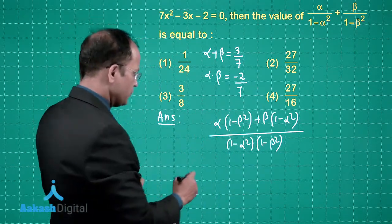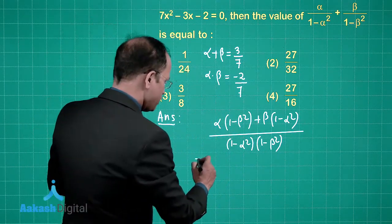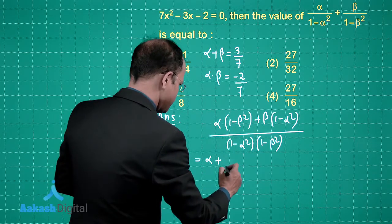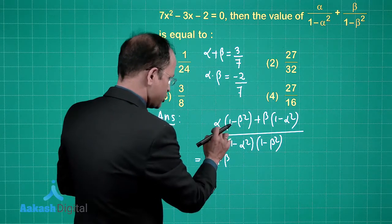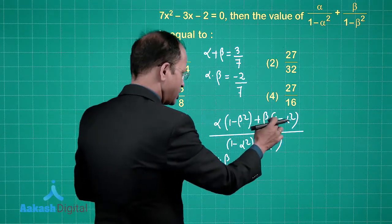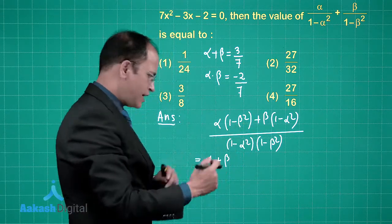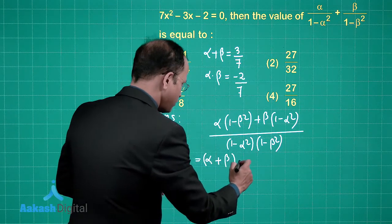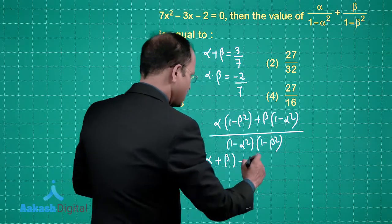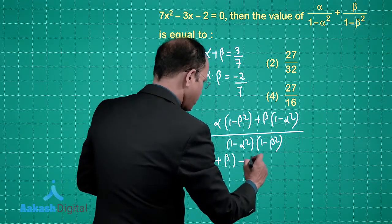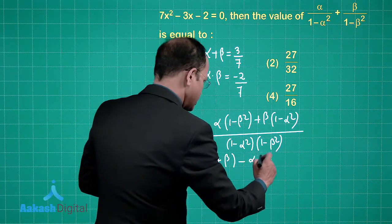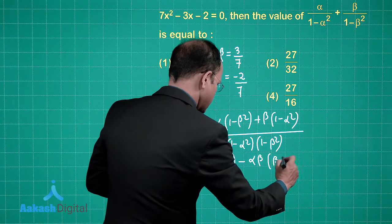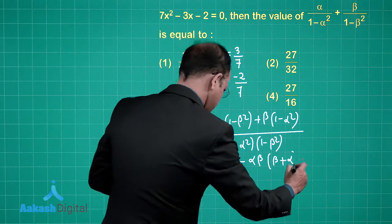For the numerator: α·1 + β·1 gives (α+β), and then we take αβ common from the remaining terms, giving (α+β) - αβ(α+β), which simplifies to (α+β)(1 - αβ).